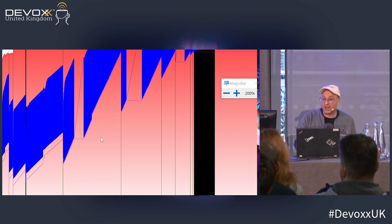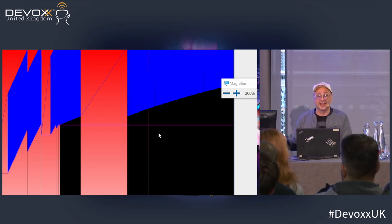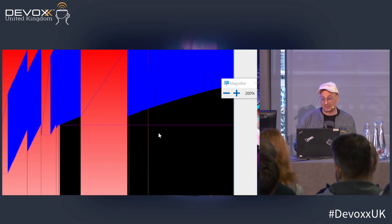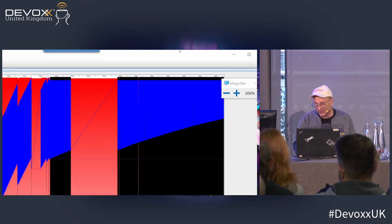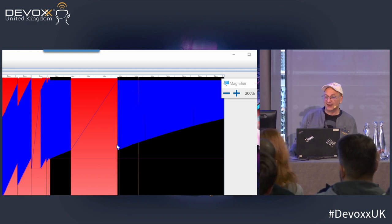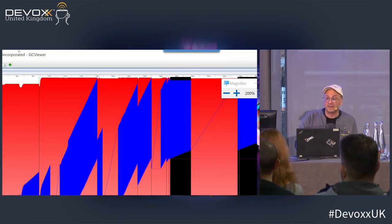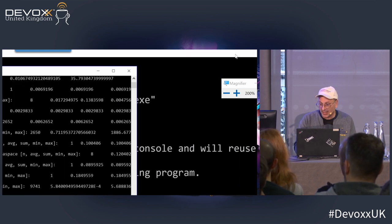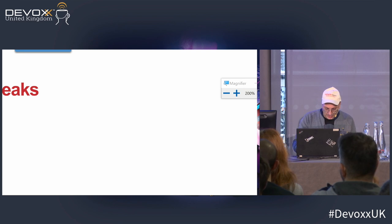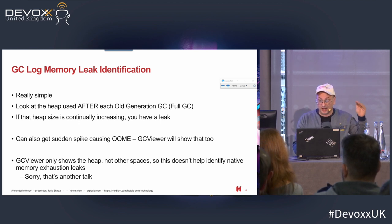You get to a state where lots and lots of full GCs happen all together and your application slows to a crawl, because it's not really doing your application work — it's just doing garbage collection. This is the point where everything's slowed down and users start screaming and they notice there's a problem, but you could have noticed this way before. Turn on GC logging, use a GC viewer to view it — look at the heap after each old generation or full GC or major GC, whichever you want to call it.